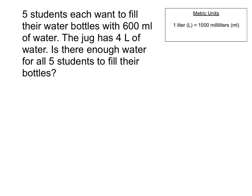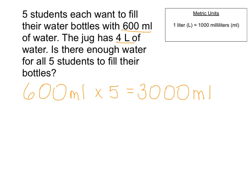Here's a story scenario. Five students each want to fill their water bottles with 600 milliliters of water. The jug has four liters of water in all. Is there enough water for all five students to fill their bottles? Each student needs 600 milliliters, and we have five groups of that, so that's 3,000 milliliters of water needed.